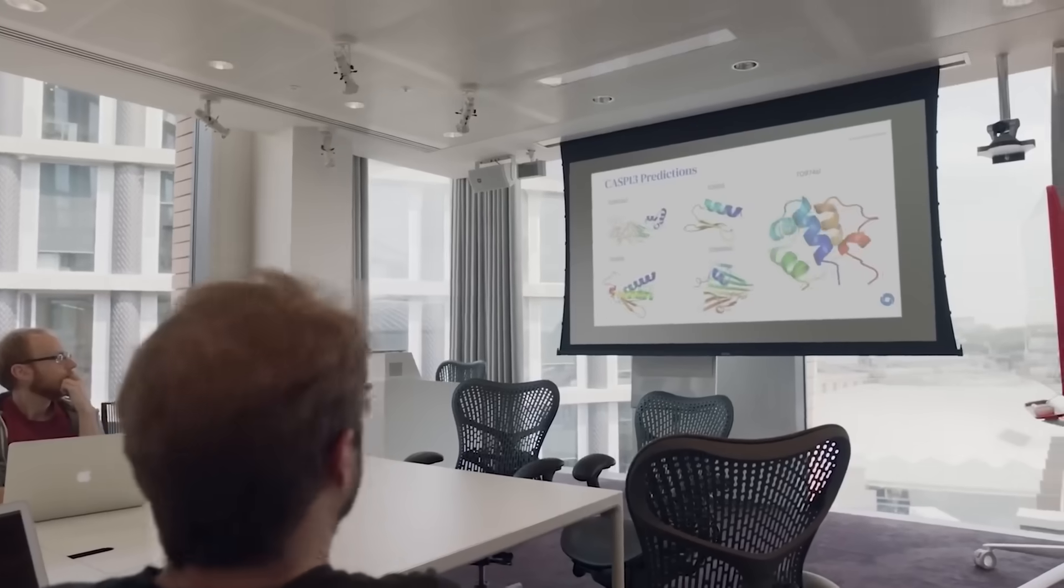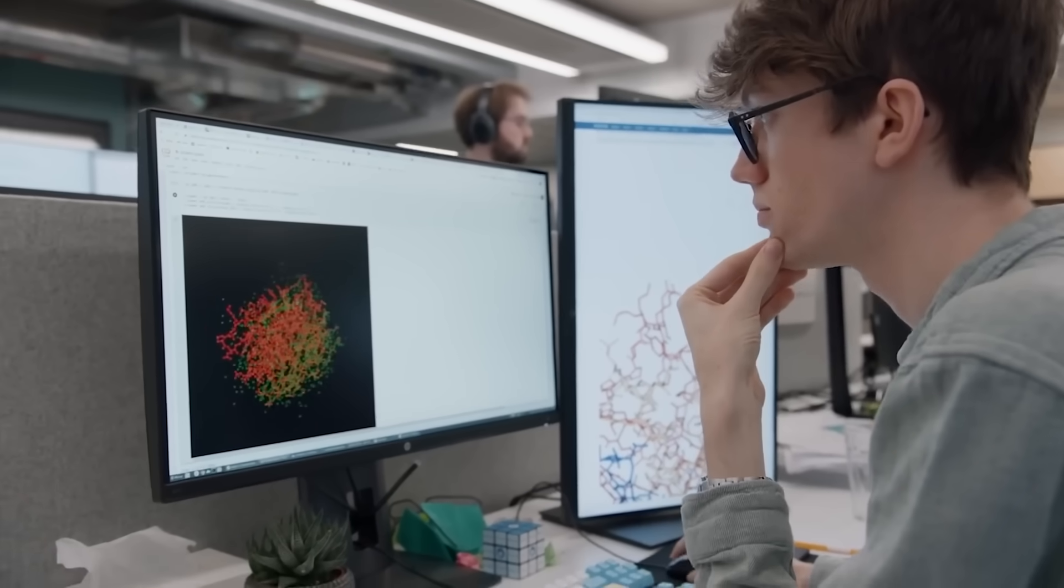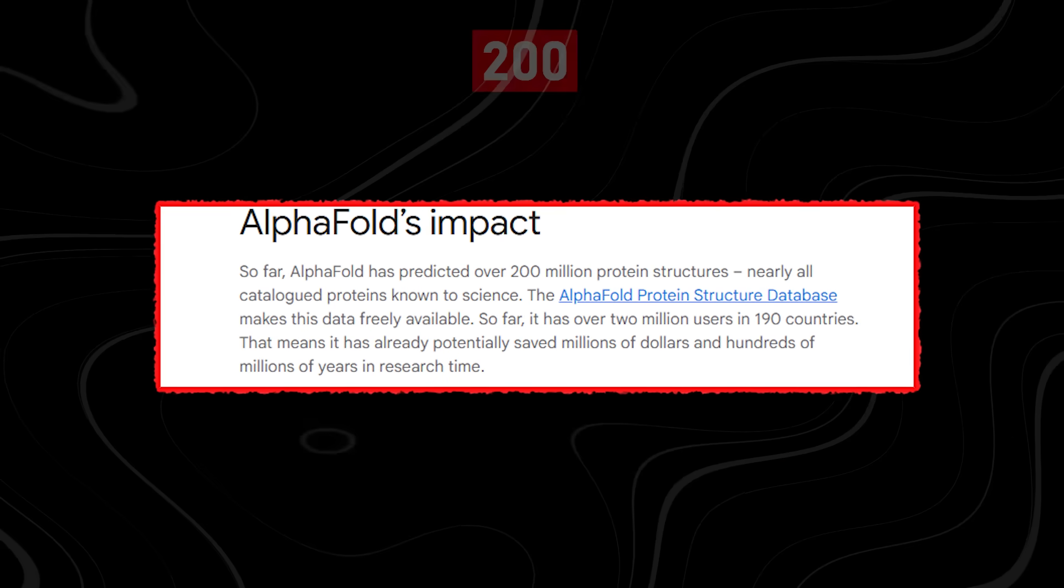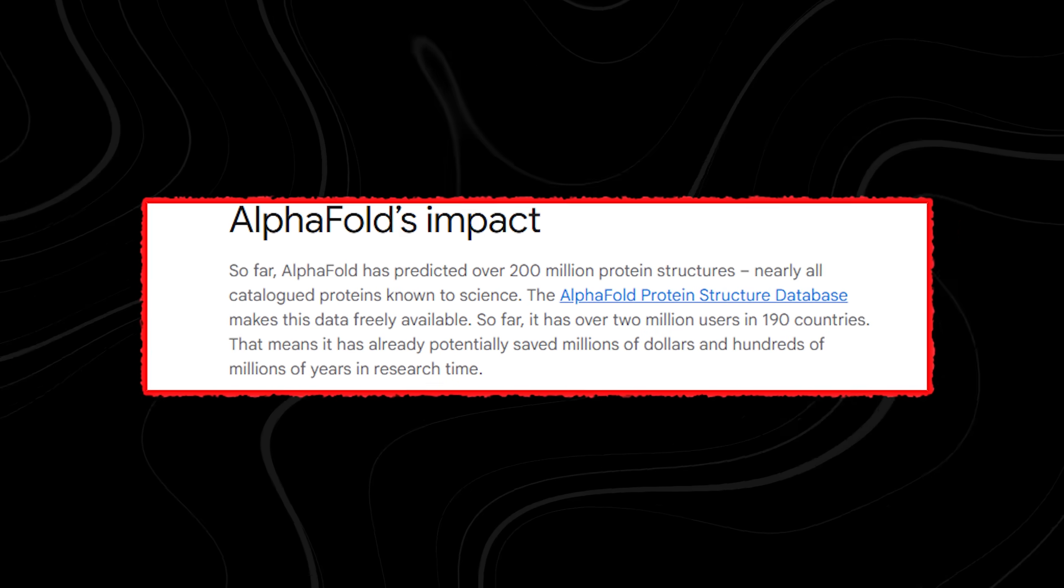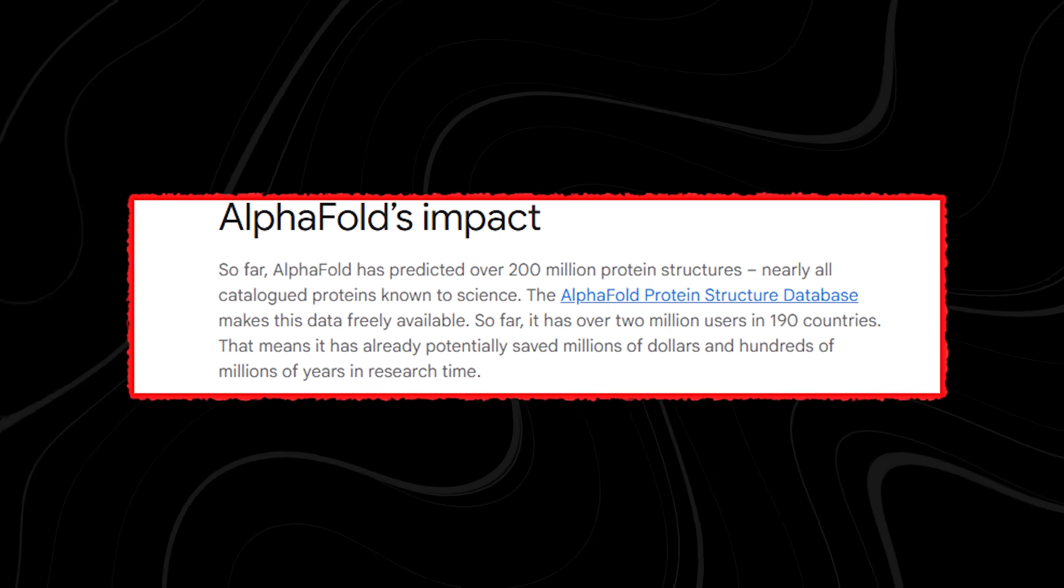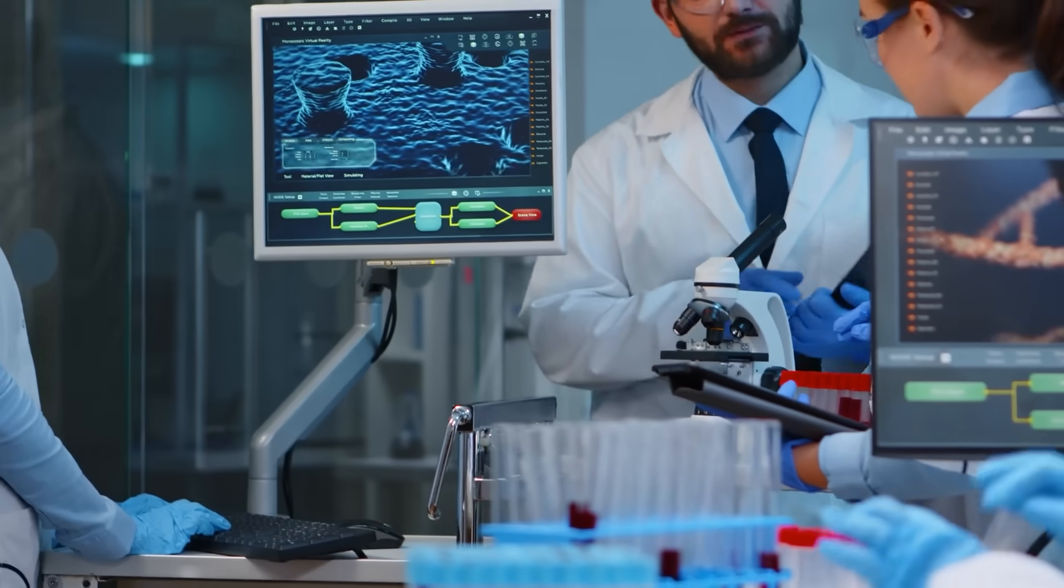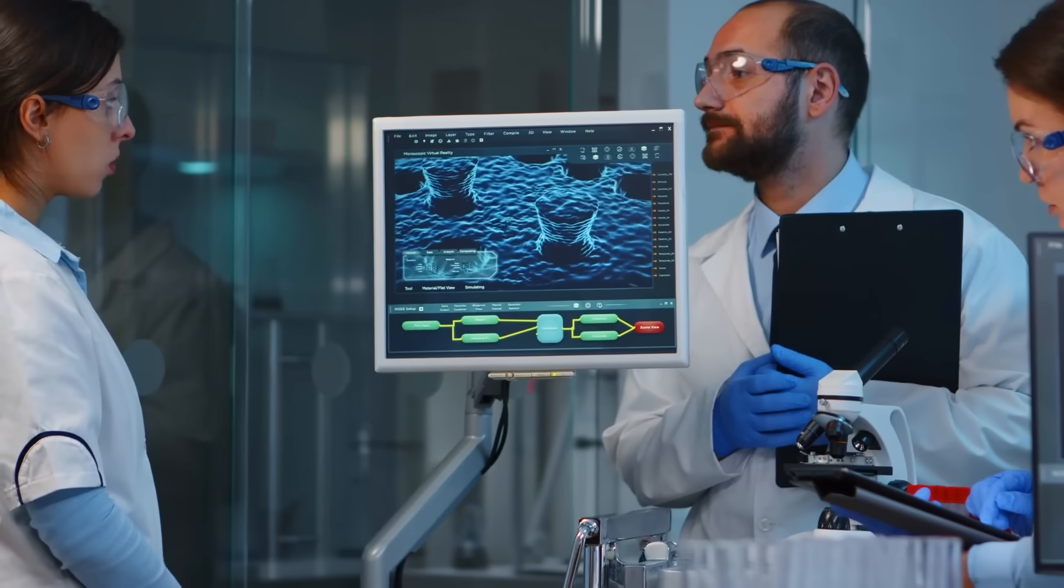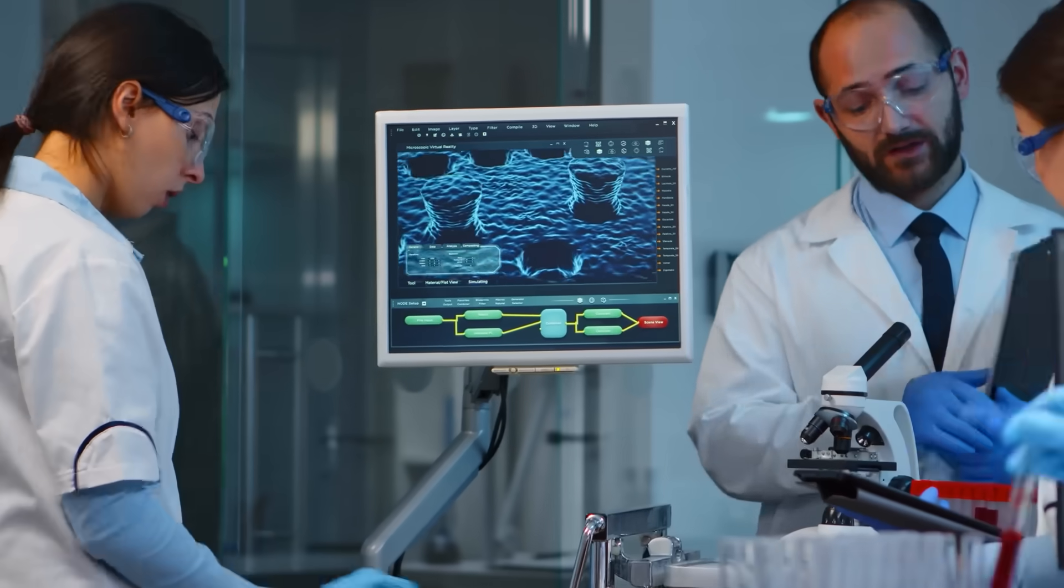DeepMind's AlphaFold changed everything in 2020, accurately predicting structures in hours. By 2022, it had mapped over 200 million proteins, covering nearly every known protein on Earth. Researchers are now using these predictions to advance treatments, design enzymes, and even explore ways to tackle antibiotic resistance.